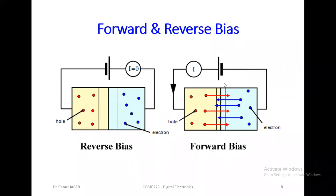Forward bias means the diode operates normally. We put plus electricity with the P-type on the anode and negative with the cathode. This is normal operation. If we reverse the polarity — reverse bias — it creates an open circuit. The circuit opens, the diode stops conducting.